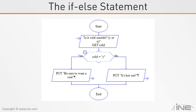We could also use an else statement with our if statement. Looking at that in a flowchart, we would first ask 'Is it cold outside? Y or N?' If the user puts in the letter Y and the variable cold is equal to Y, then it will print 'be sure to wear a coat.' If the user puts in an N, which means cold will not equal Y, so it'll go the other direction — down the no side — and it will print 'it's hot out.'